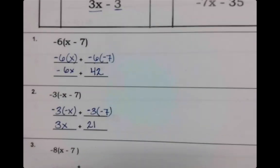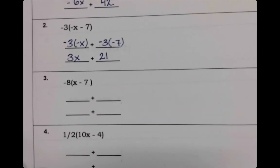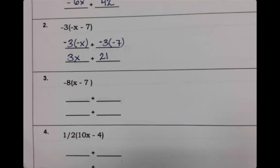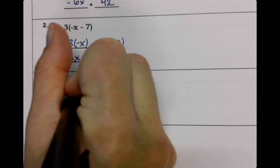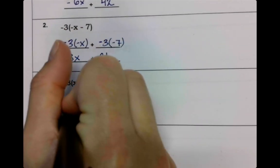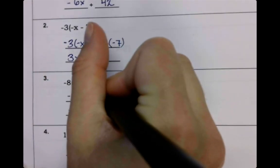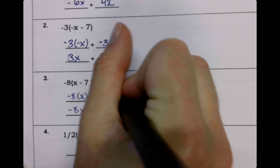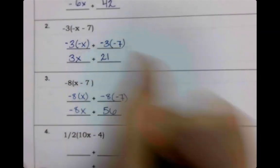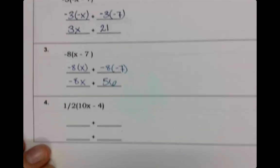All right, I want you to try number 3. So pause the video and try number 3. Welcome back. So we should have negative 8 times x, which is negative 8x. And then we should have negative 8 times negative 7, which is a positive 56. That's what you should have gotten.